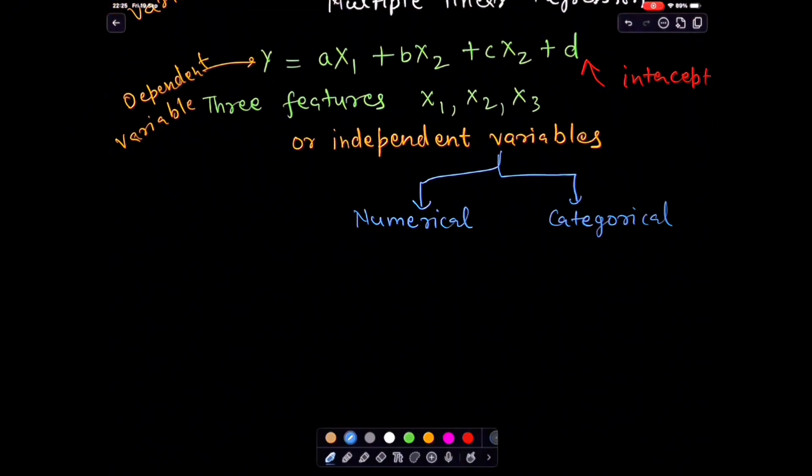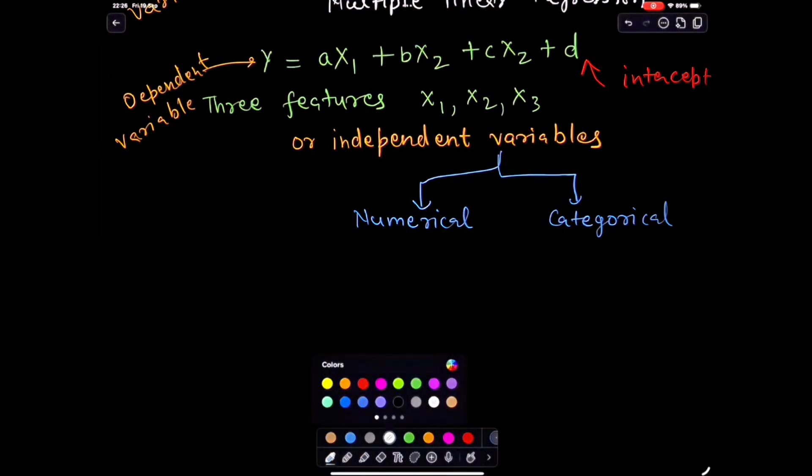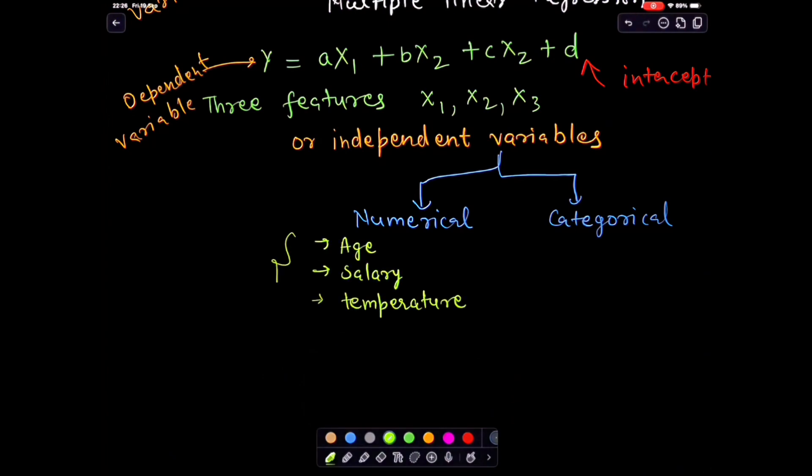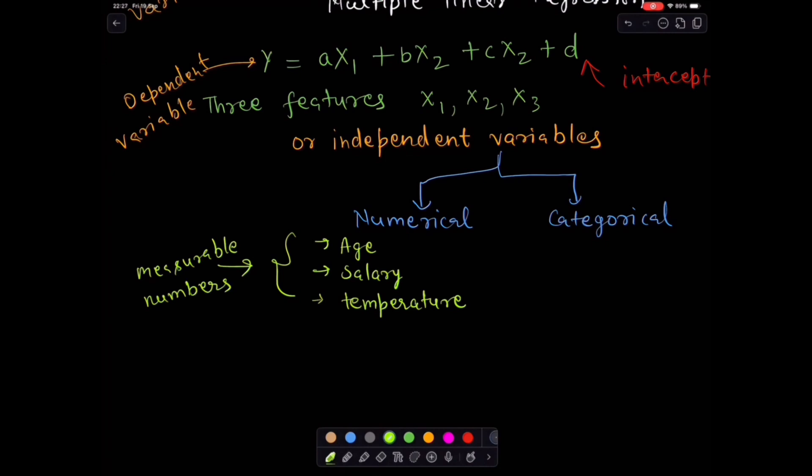Data usually comes in two types: numerical and categorical. Numerical things like age, salary, temperature, all measurable numbers. And these come in two flavors: discrete and continuous.